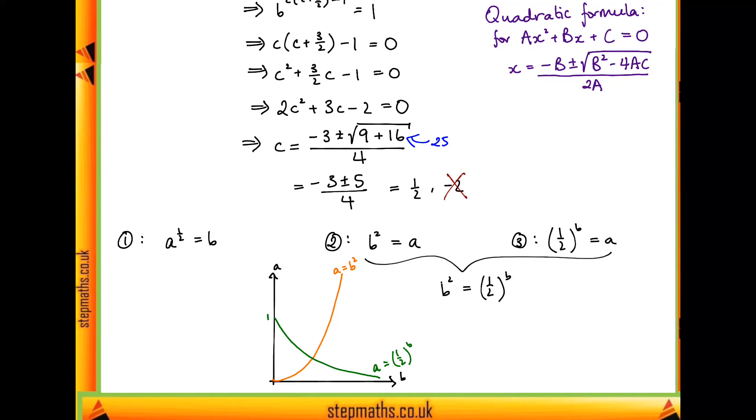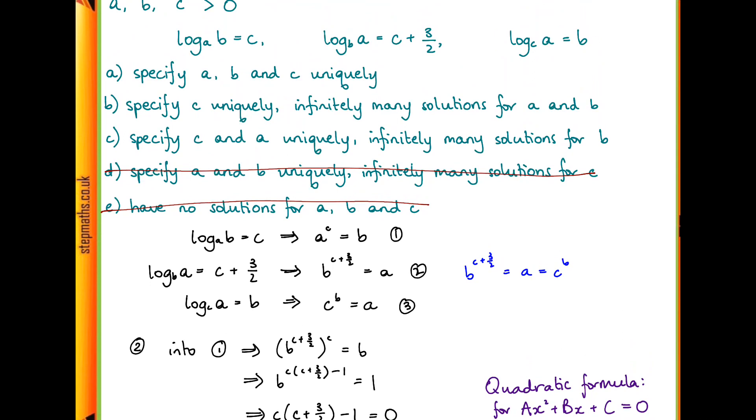We've got a unique c which we know is a half, and a unique a and b which we don't know but we know they're unique. So our answer is going to be A.